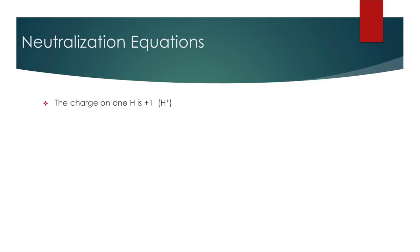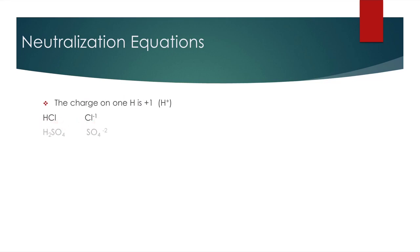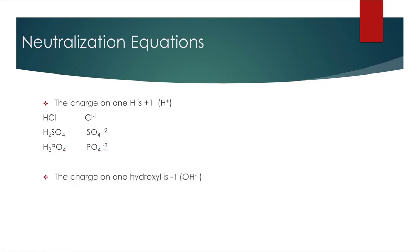Now we have neutralization equations. In a neutralization equation, acid reacts with base to form salt and water. Many people still don't know how to find the formula of salt, so we are going to look at how to find the chemical formula of the salt. The charge on one hydrogen is plus one. So in an acid, if there is one hydrogen, the charge on the other anion will be minus one — for example, Cl⁻ is minus one. If there are two hydrogens, the sulfate anion will be minus two. If there are three hydrogens, PO₄³⁻ will be minus three.